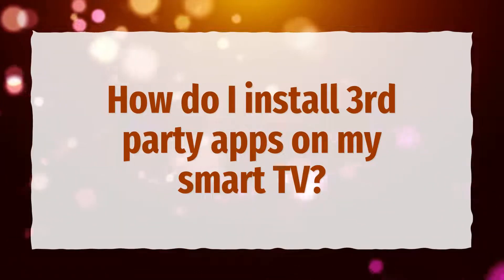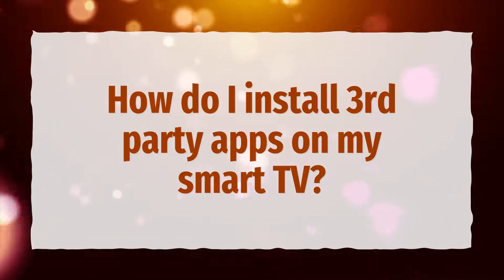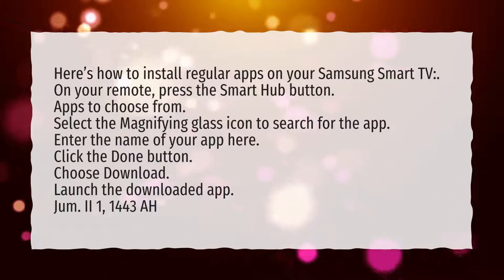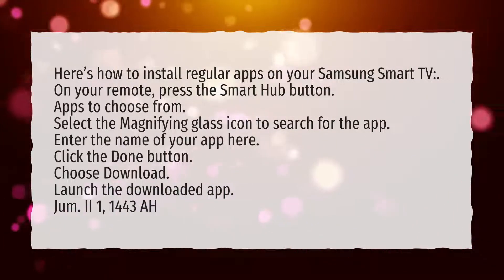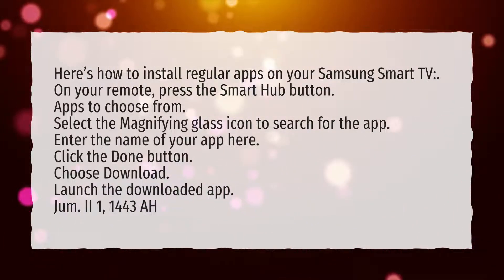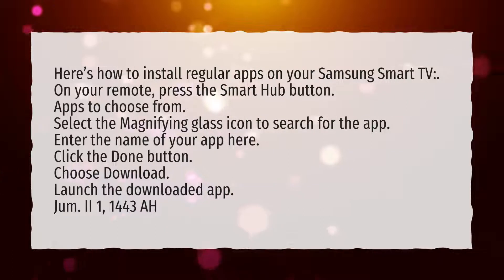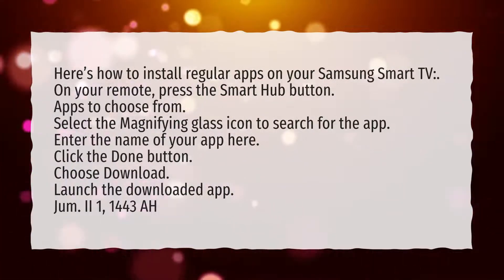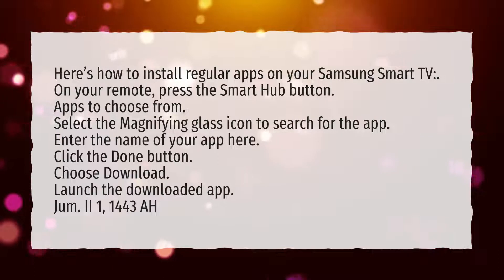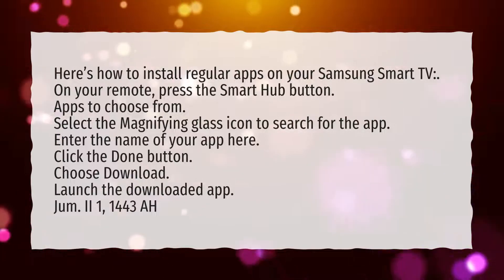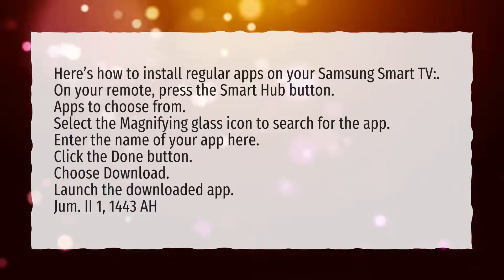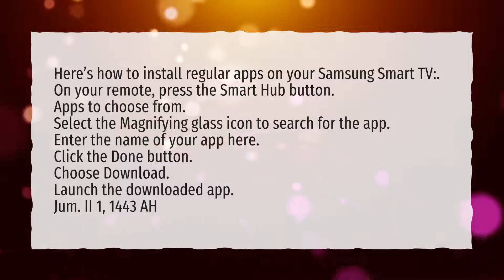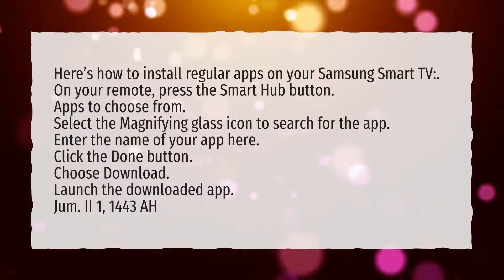How do I install third-party apps on my Smart TV? Here's how to install regular apps on your Samsung Smart TV. On your remote, press the Smart Hub button. Choose from the apps available. Select the magnifying glass icon to search for the app. Enter the name of your app, click the Done button, choose Download, then launch the downloaded app.